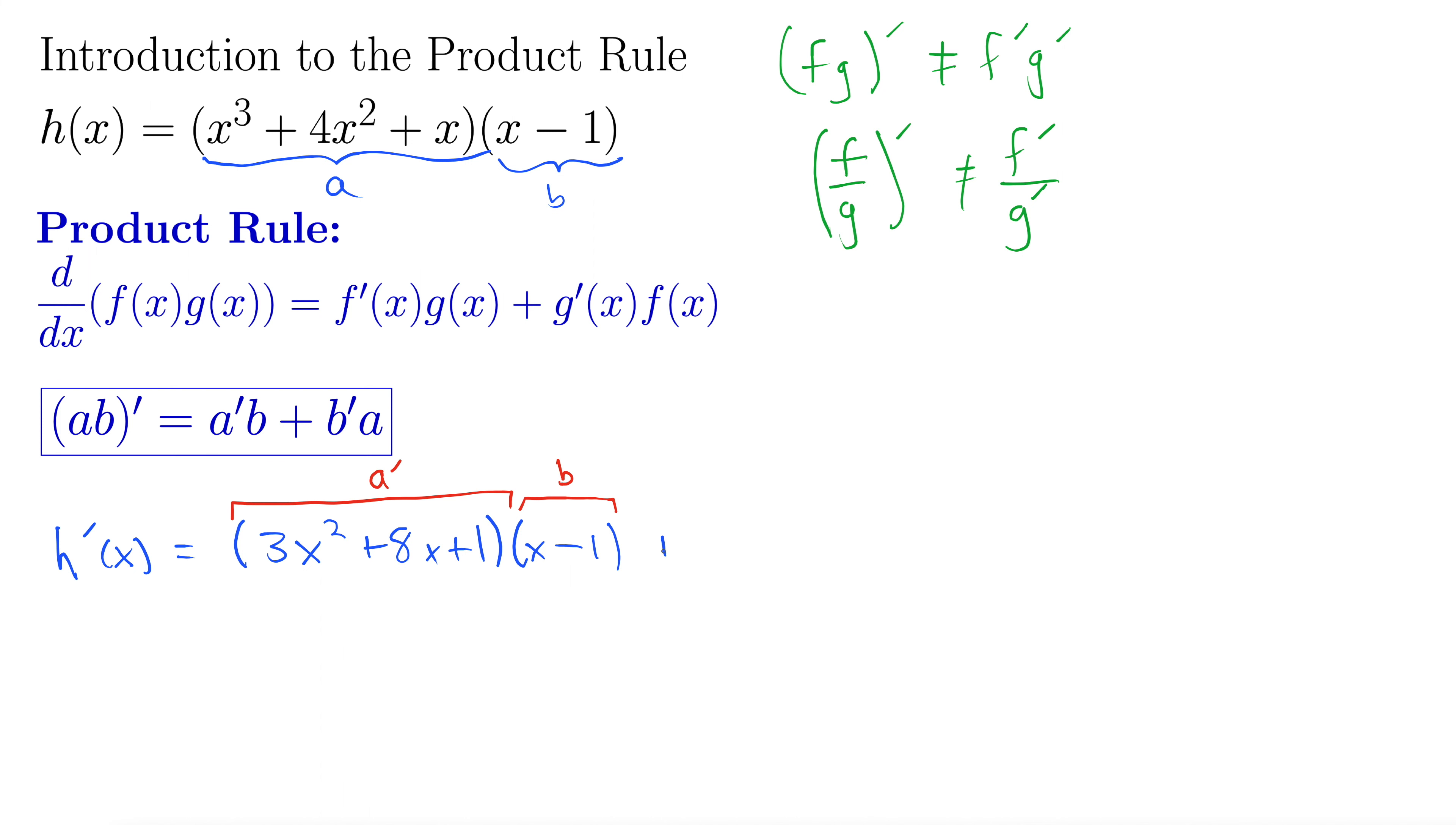Next we do b'a. So plus, well the derivative of x - 1 is actually just 1, times a, the original function. x³ plus 4x² plus x. There's b'a.